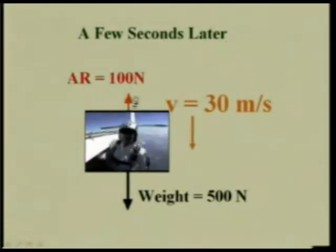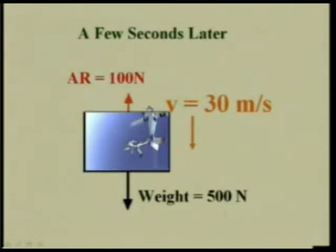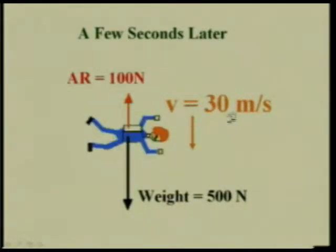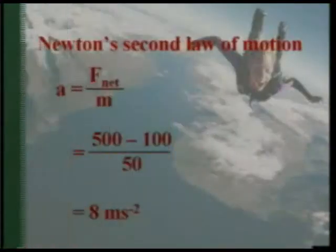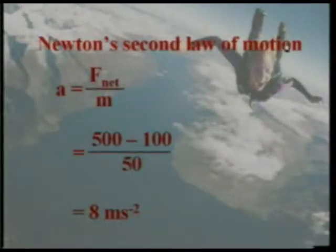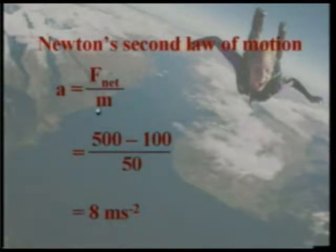A few seconds later, air resistance is now 100 Newton, while the downward weight remains 500 Newton. The velocity increases to 30 meters per second. As velocity increases, the skydiver encounters more air resistance, since air resistance depends on the area and velocity of the body. By Newton's second law, the acceleration equals net force divided by mass: (500 minus 100) divided by 50, which equals 8 meters per second squared. Initially bodies fall at 10 m/s², but now it is 8 m/s², though velocity is still increasing.